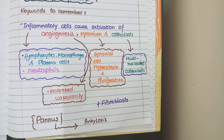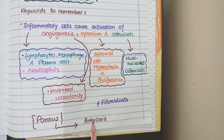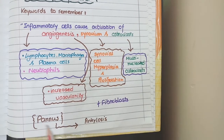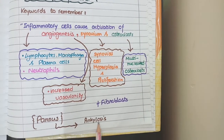Gradually with time, this PANAS tissue becomes more fibrotic and calcified. When this PANAS becomes more fibrotic and calcified, it is known as ankylosis. So PANAS can eventually turn into ankylosis.